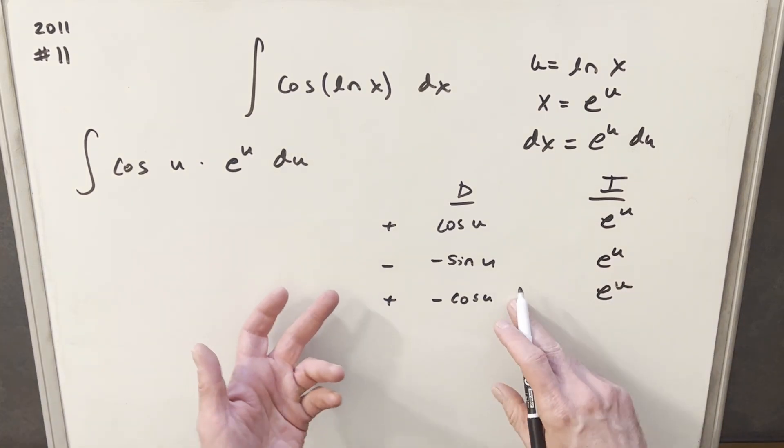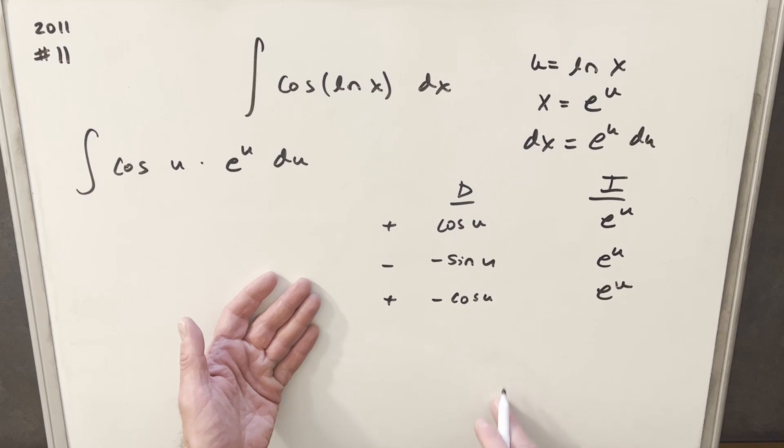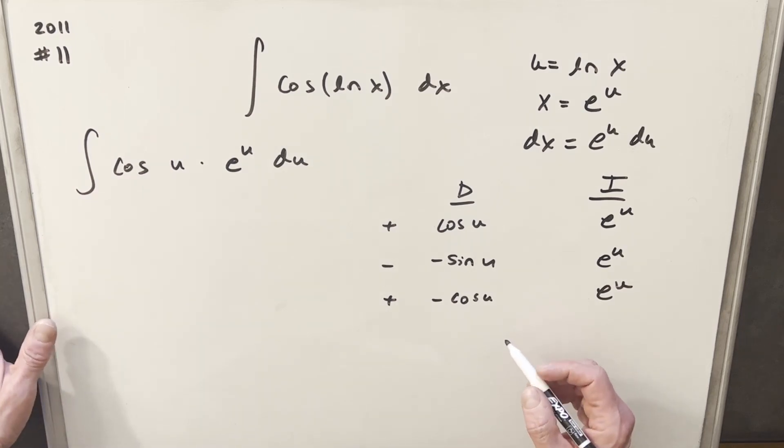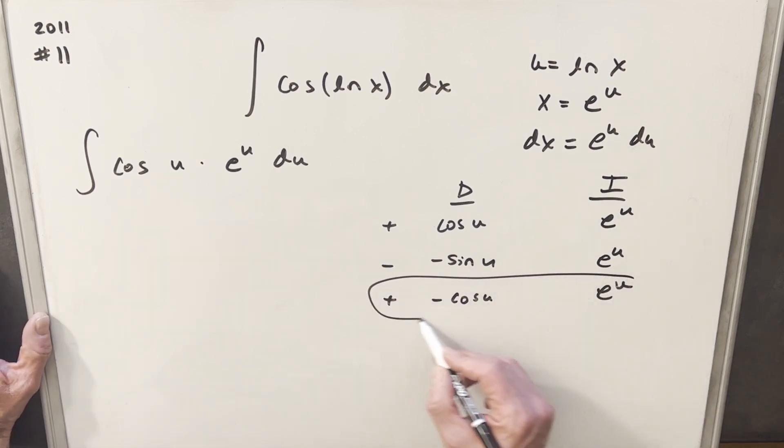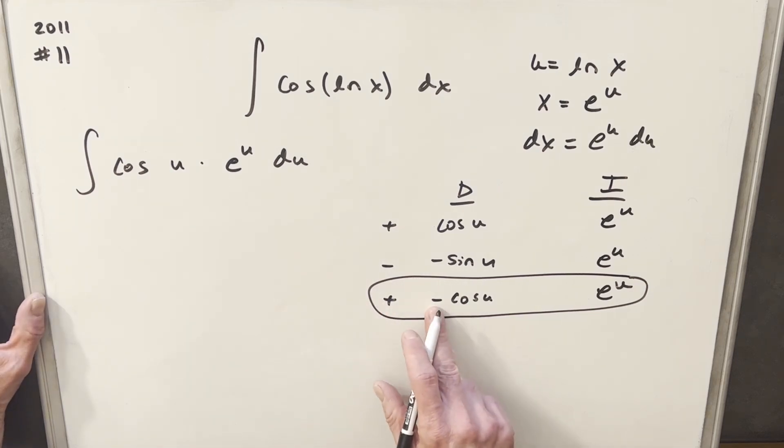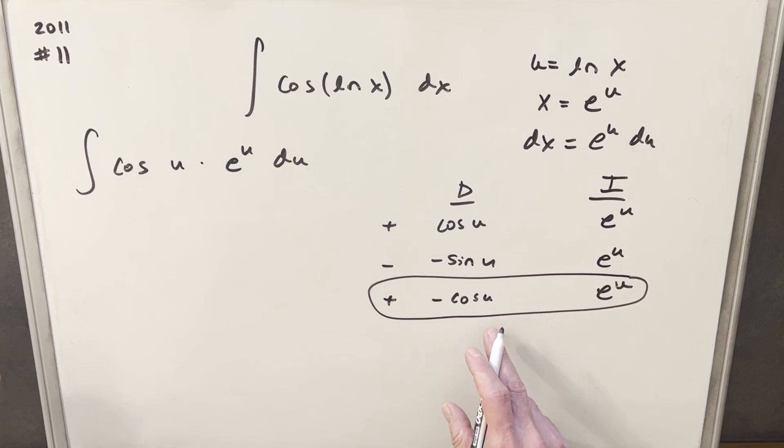And then you might be wondering, well, why did I stop on this row? Why don't I just keep going? We could have done 5 or 10 of these. The thing you want to notice here is every row is an integral, and then if we just look at this row right here, we're basically back to our original integral just with a minus sign on it. So generally when the integral repeats, that's a good place to stop and then just kind of try to solve for our final solution.